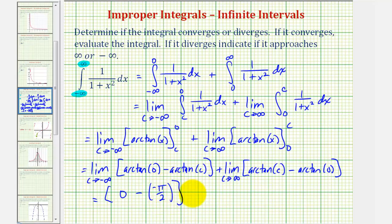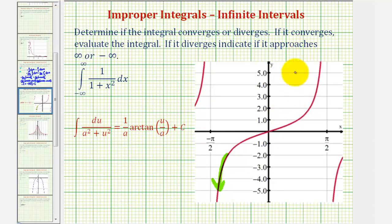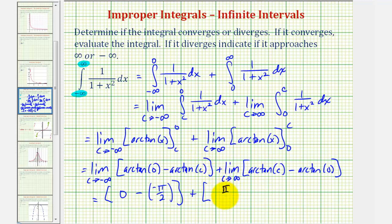So we'd have minus negative pi over two. Now as c approaches positive infinity, for arc tangent c where c is approaching positive infinity, we're looking for an angle theta such that the tangent function value is approaching positive infinity. Going back to our graph, notice the tangent function values are approaching positive infinity when our angle theta is approaching pi over two. So we'd have plus pi over two, minus arc tangent zero which is zero. This gives us positive pi over two plus positive pi over two, which is two pi over two, or just pi.